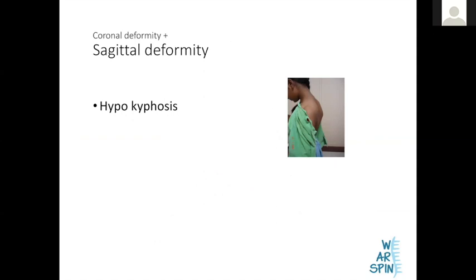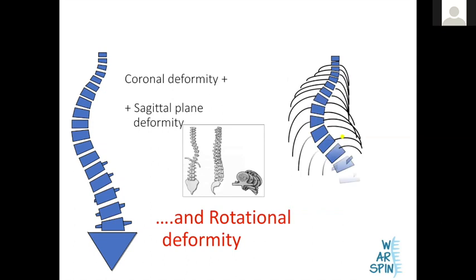One plane is what you see front-on, the coronal plane, which is a C-shaped curve. On the side view, you see a hypokyphosis — unlike common perception, it is actually a flat back or a reduction in kyphosis. A scoliosis is a lordoscoliosis rather than a kyphoscoliosis. And in fact, it is actually a rotational deformity. Imagine a scoliosis as a stack of carom coins twisted up in the middle, causing the spine to bend in multiple planes.